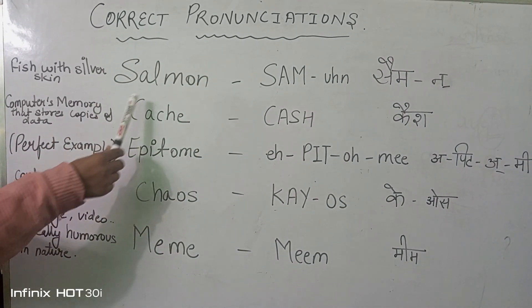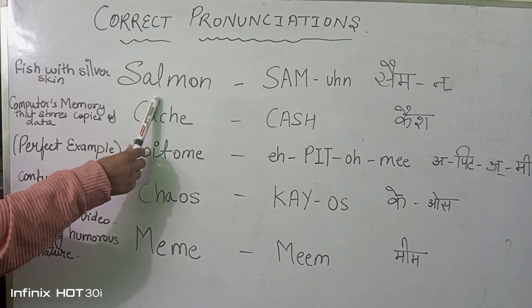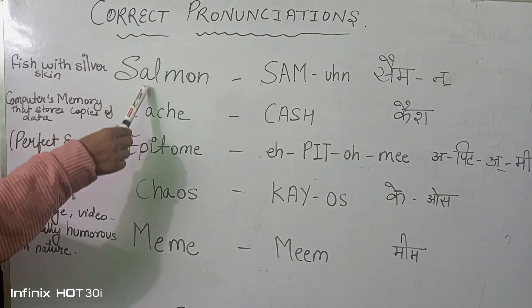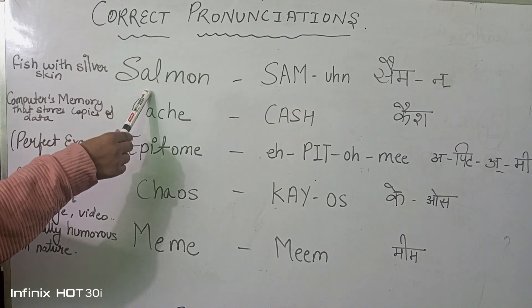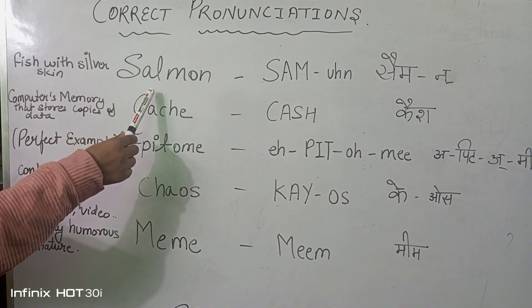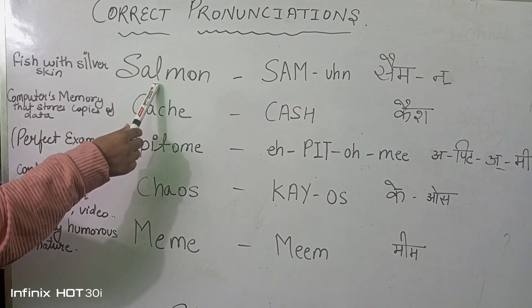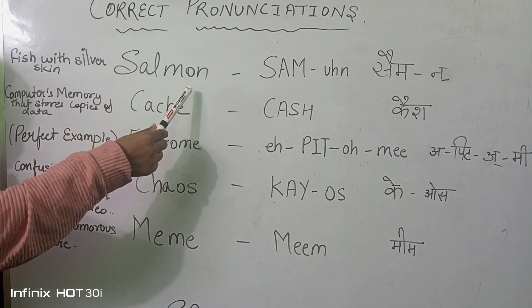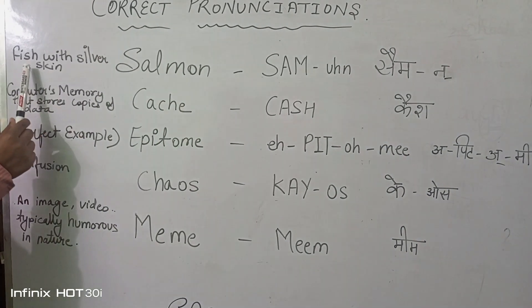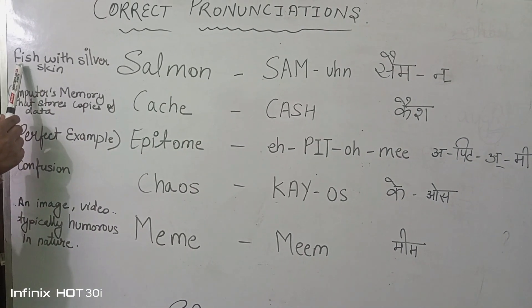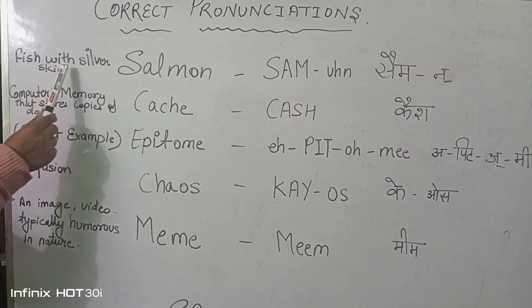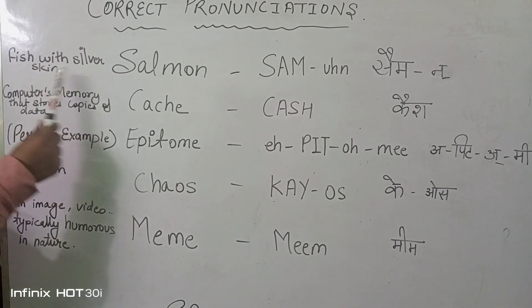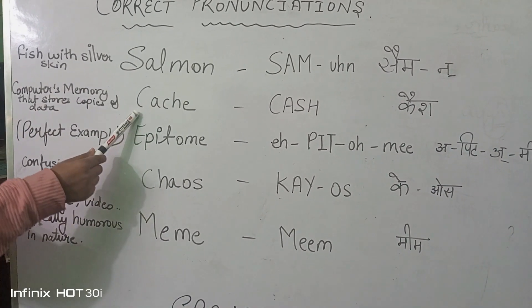The first one is salmon. Here the L is silent — we do not need to pronounce L. What is the meaning of salmon? Salmon means it is a fish with silver skin.